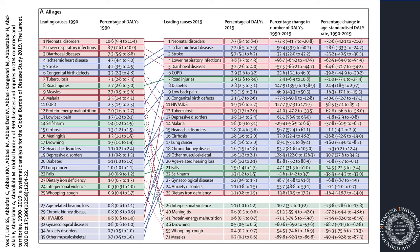Malaria is incredibly impactful in the world. Looking at global leading causes of death in 1990 and 2019, malaria was the 10th leading cause of death worldwide in 1990, but dropped to 14th by 2019. There has been some progress against malaria.